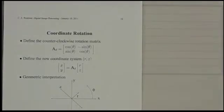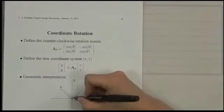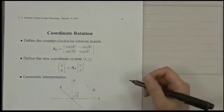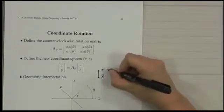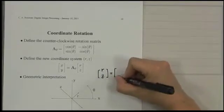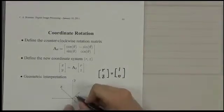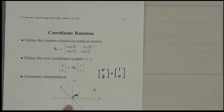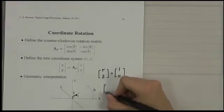The geometric interpretation is like this. Let's say we're looking at the [r,z] coordinate. Let's pick [r,z] equal to [1,0]. We're looking at this point, and this is 1. Now let's calculate the x-y coordinates.